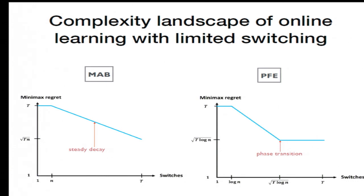If you have more than square root of T switches, you have the optimal regret rate. And below that you start paying a lot. And you pay exactly in this kind of linear fashion on the log-log scale.